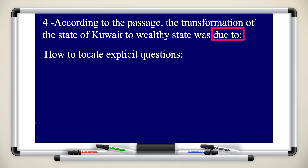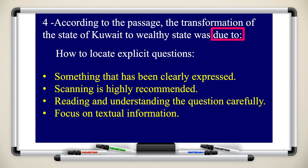Question number four: according to the passage, the transformation of the state of Kuwait to a wealthy state was due to... How do we locate explicit questions? It is something that has been clearly expressed. You need to scan the paragraph or the article, read and understand the question carefully, and focus on the text information.